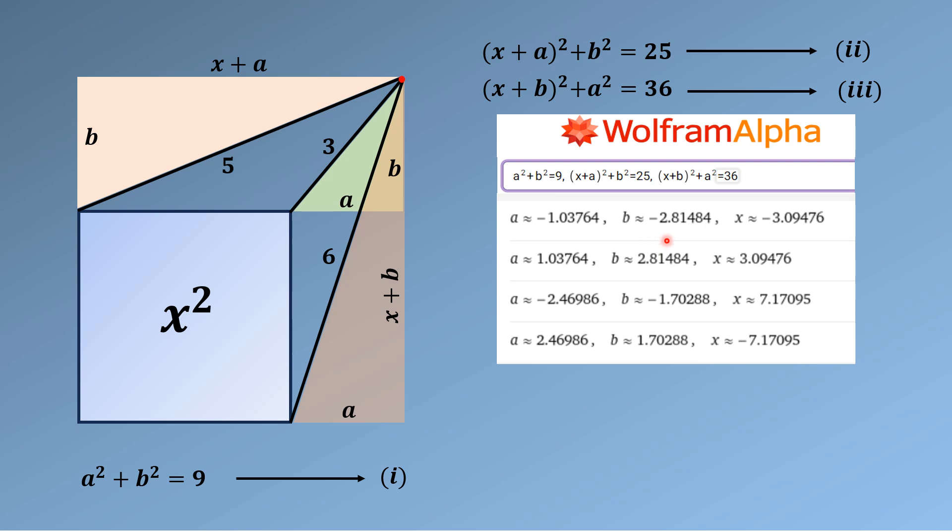So from here, from these four solutions, solution number one is rejected, third is also rejected, and fourth is also rejected. The only solution with all positive values is the second solution, in which X = 3.09476 units, which is the side length of this square here.